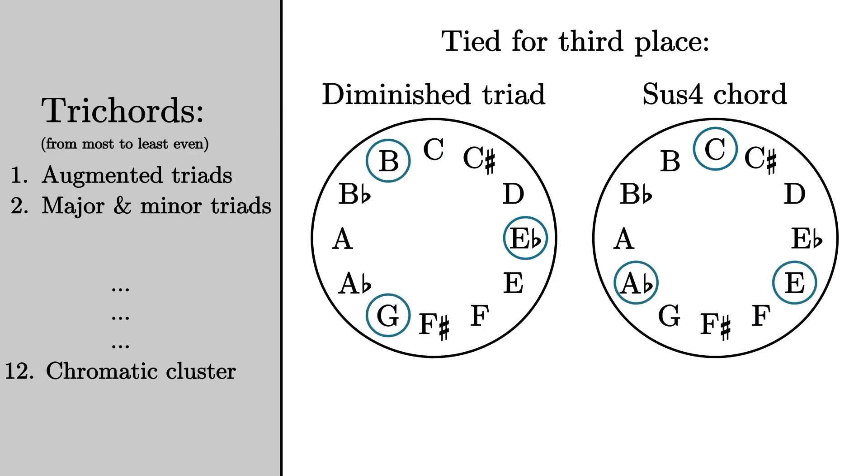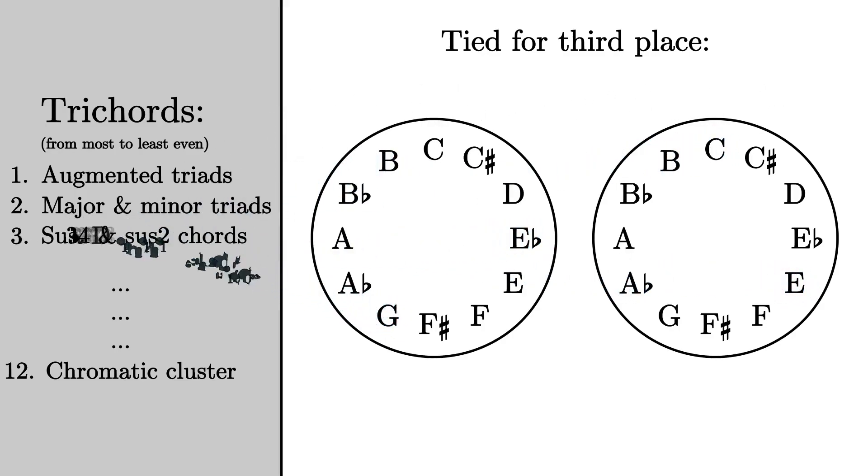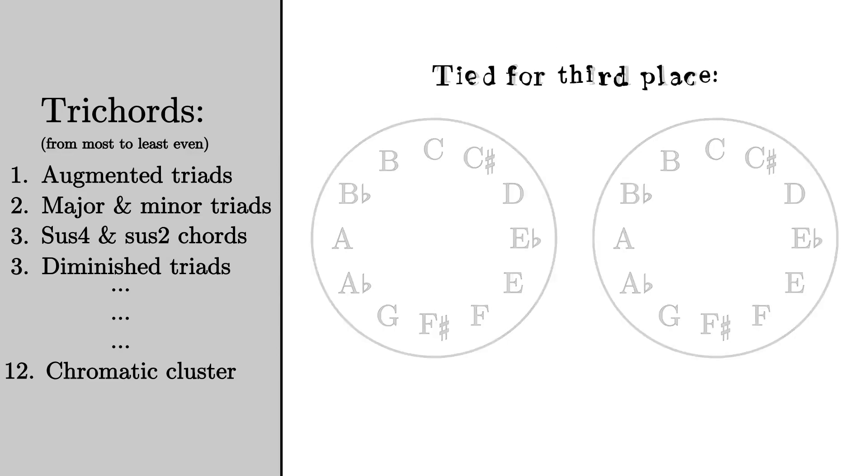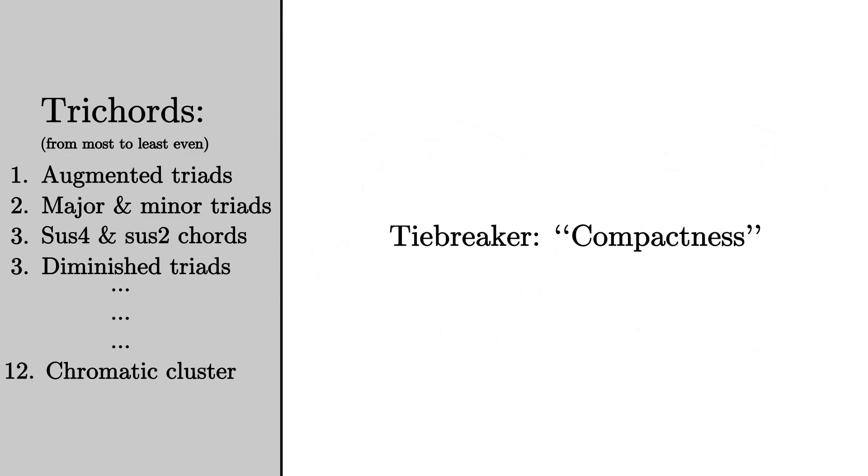To make our list, we had to choose a way to break ties between two sets with equal evenness. We decided to consider another feature called compactness. And I'll hand things back off to Jay to explain how that works.